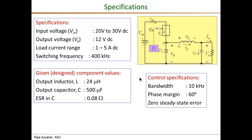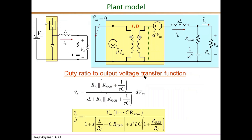To design the controller we need the small signal model of the buck converter. Using the small signal average model of the power pole derived in an earlier video, we obtain the d-to-output voltage transfer function. This transfer function has a zero due to the ESR and a complex pole pair due to the output LC filter. This will serve as our plant transfer function in the K-factor based controller design.